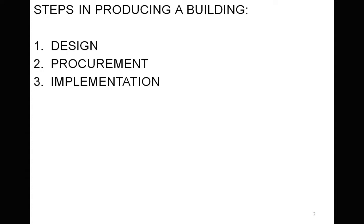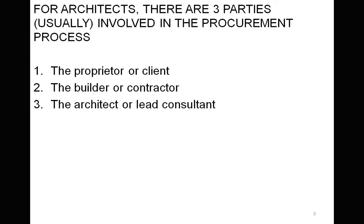I'm not specifically talking about contracts per se, but contracts are part of it and we will talk about contracts in a future lecture. Construction contracts need to cope with the process of procurement. In terms of the procurement process for architects, there are usually three parties involved: the proprietor or client, also known as the principal; the builder or contractor; and the architect or lead consultant. These three parties are usually separate groups or individuals, but one person can do all three roles, such as an owner-builder who designs, procures, and implements a project by themselves.